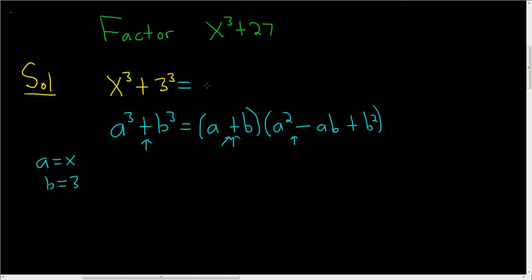So here we end up with x plus 3. And then we have a squared, so x squared minus ab, so 3x, and then plus b squared. So this is our b, we square it, we get 3 squared, which is 9. And that is the final answer. I hope that helps.